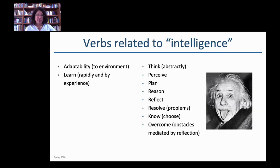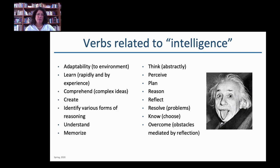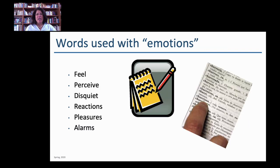Verbs related to intelligence include being adaptable, learning, comprehending, creating, identifying, understanding, memorizing, thinking, perceiving, planning, reasoning, reflecting, resolving, knowing, and overcoming obstacles. Words associated with emotions — some that come to mind are feeling, perceiving, disquiet, reaction, pleasure, alarms. Different people will use the word emotions in different types of ways.